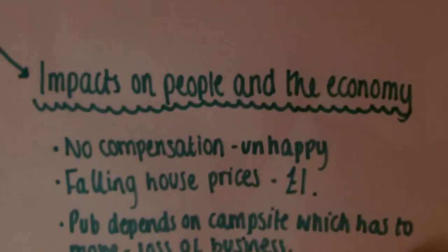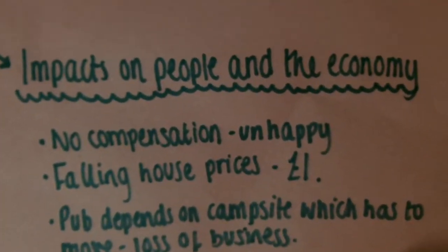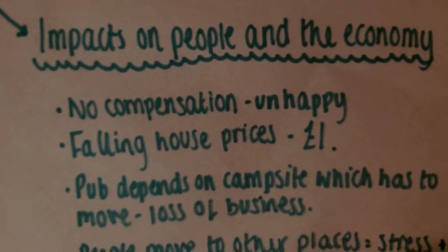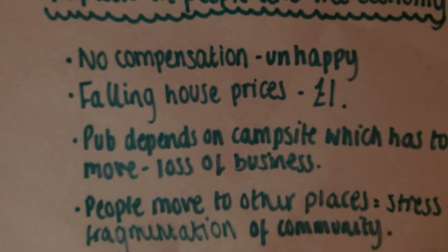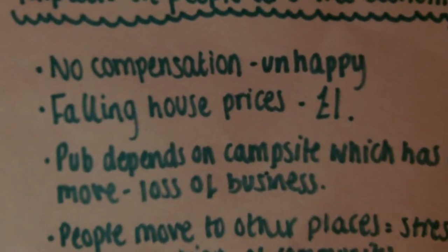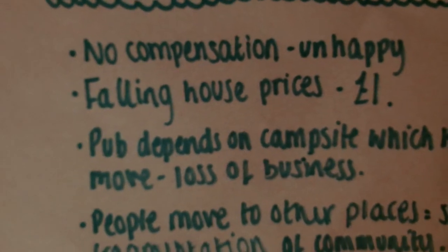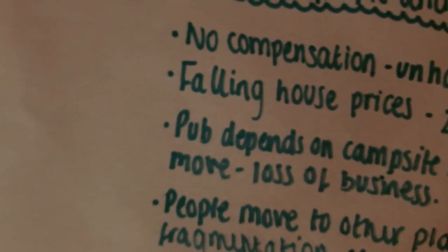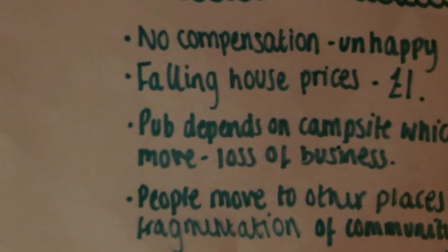The impacts on people and the economy: people weren't paid compensation straight away, so people were unhappy which caused problems. Falling house prices meant that people wouldn't be able to move, because the houses were only worth £1.